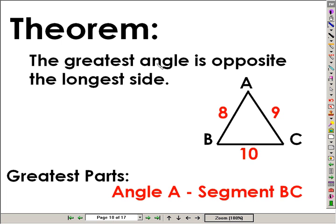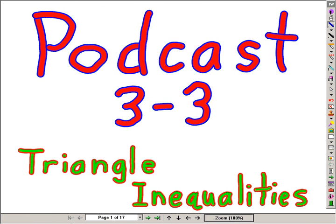The theorem states, the greatest angle is opposite the longest side. In this case, 10 is the longest side, A is the greatest angle. Angle A, corresponding with segment BC, as the largest or greatest parts. This has been podcast 3-3, Triangle Inequalities.